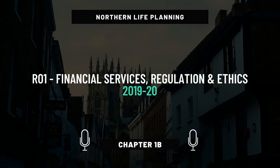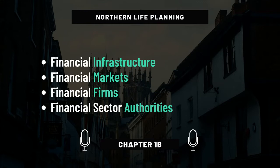Chapter 1B. In this section, we will go over the 4 key components that make a financial sector. To name them quickly: first we have the financial infrastructure, then we have the financial markets, then we have financial firms, and last the financial sector authorities.